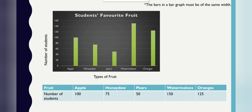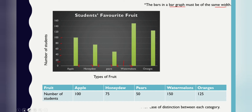Bars in a bar graph must be the same width. Here we have apple, honeydew, pears — whenever you draw the diagram, you must take a space, and the bars will be the same width. The scale goes 20, 40, 60, 80, and 100. The vertical axis shows the number of students, the horizontal axis shows the types of fruits — students' favorite fruit. The space between bars allows for ease of distinction between each category.